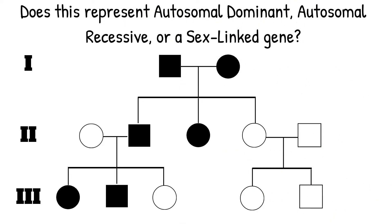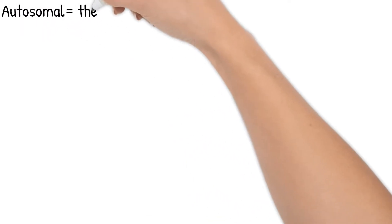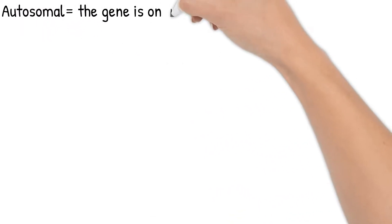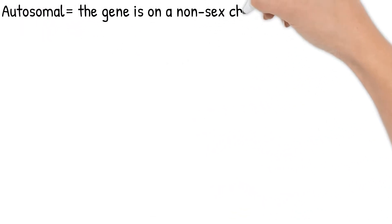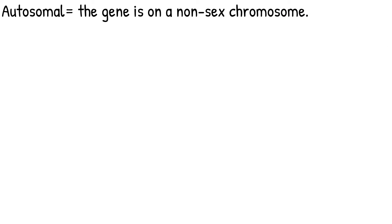There are some common rules for each of these we should look at first to help us determine. Autosomal just means the gene is on a chromosome other than your X or Y, meaning it's not sex-linked.